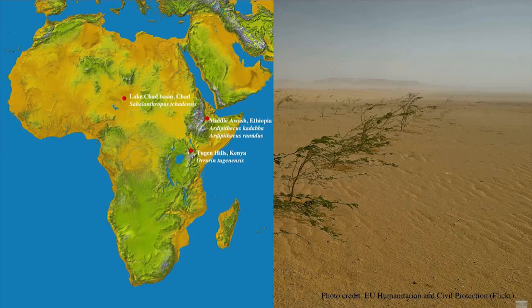This is a very different environment than many of the fossils we'll be talking about come from, and their discovery was quite a surprise. Looking at our map, we can see that Lake Chad is situated here in Central Africa, whereas the other fossils we'll be talking about today come from the East African Rift Valley, from Ethiopia and from Kenya.